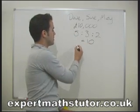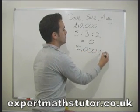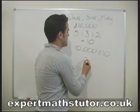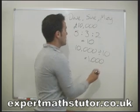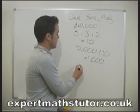How many times are we going to have to do it? We're going to have to do it ten thousand divided by ten. So that obviously equals a thousand. Dave gets five lots, so Dave's going to get five times a thousand, so Dave's going to get five thousand pounds.